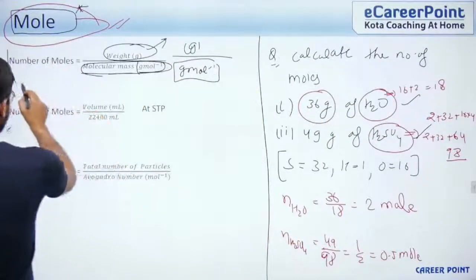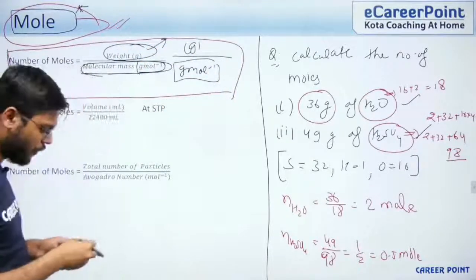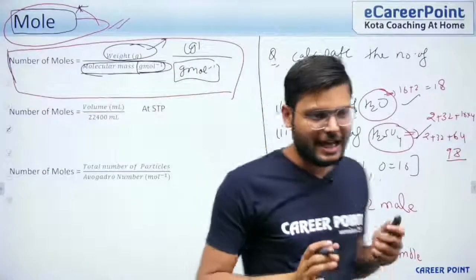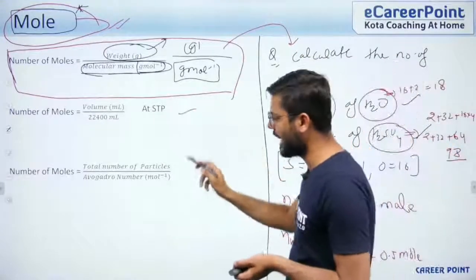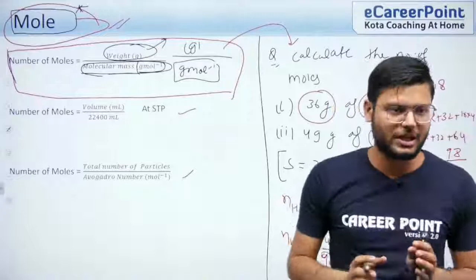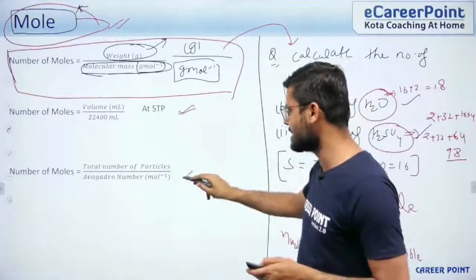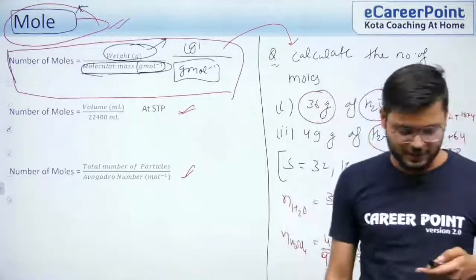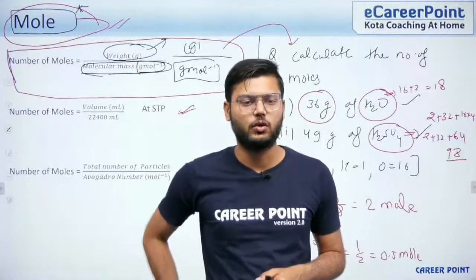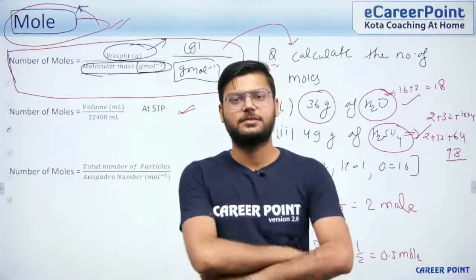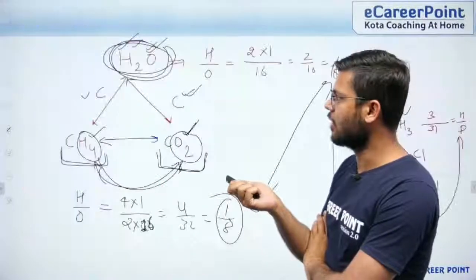For today, I am ending the lecture here. I want you all to have a recap of the five combination laws and the basic formula for number of moles. In the next lecture, we will understand this formula in more detail. Is there any doubt about any of the six laws we discussed today?